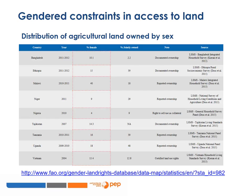This slide and the next provide selected data on gender differentials in access to land as captured by land ownership. Sole ownership of land is rare among women in any country — for example, it amounts to just 4% in Nigeria and about 15% in Vietnam. Joint ownership seems more common but still below 50% in countries like Ethiopia, Tanzania and Uganda. The Food and Agricultural Organisation (FAO) of the United Nations is a good source for this sort of data.